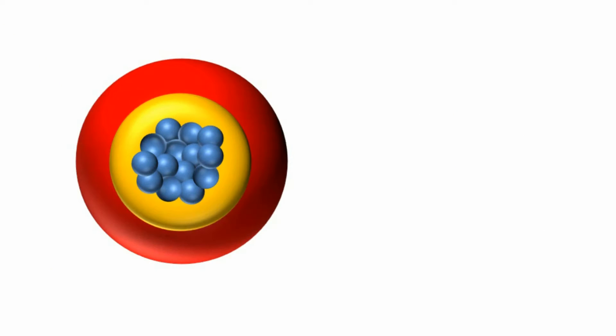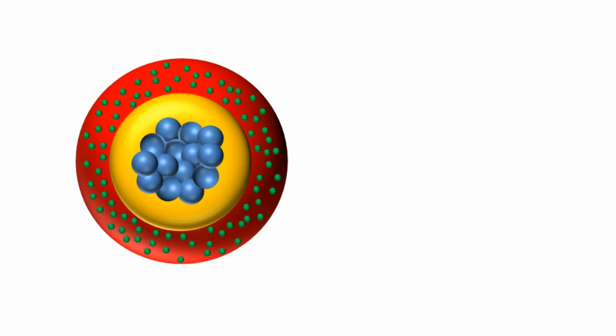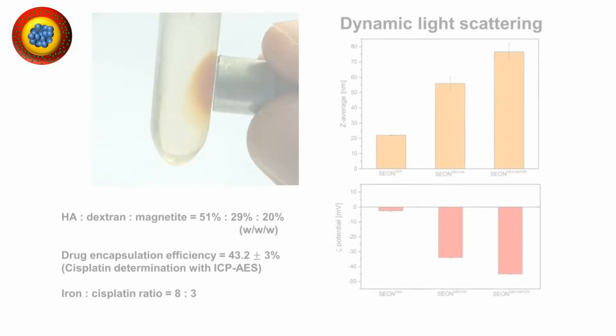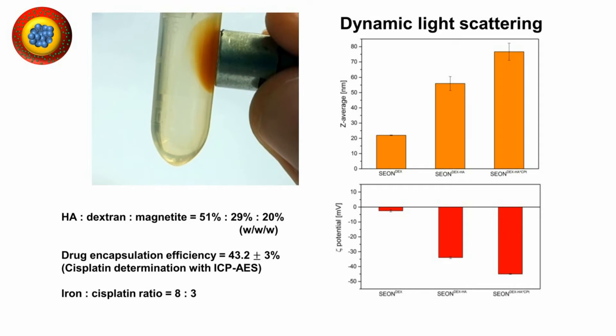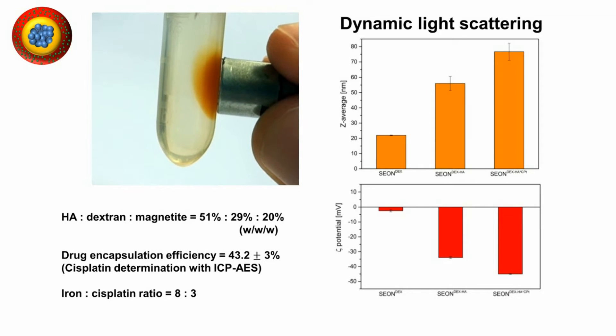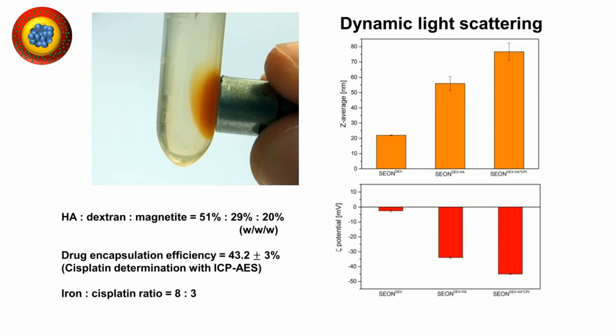In the next step, we applied hyaluronic acid coating and incorporated cisplatin into this polymeric layer. The obtained particles were controllable by an external magnet and consisted of 51 weight percent hyaluronic acid, 29 weight percent dextran, and 20 percent magnetite, with a drug encapsulation efficiency of 43 percent and an iron to cisplatin ratio of 8 to 3.